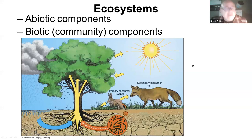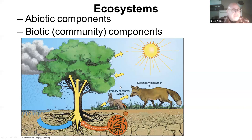I want to cover a little more on ecosystems and abiotic versus biotic components. Ecosystems have abiotic, or non-living, components like climate, for example. Climate is the major abiotic component, along with time and energy.